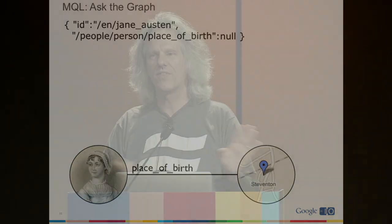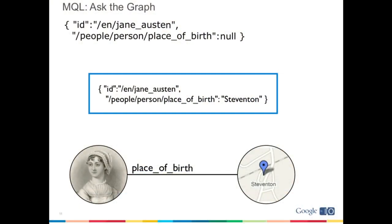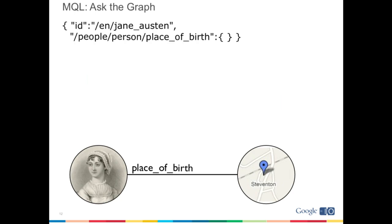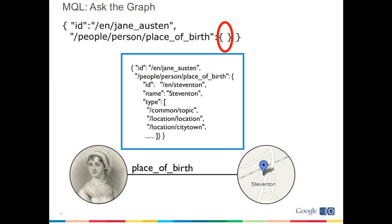When we run the query, it comes back with the label Steventon — it replaces the null with just the label of the entity at the other end. We can be more sophisticated and say we know that the thing at the other end is an object, and by using curly braces we're asking the system to expand this object. What it gives us back is all of the core object properties at the other end — the fact that it has an ID, a name, and this object has a whole bunch of different types: it's a topic, it's a location, it's a city/town.